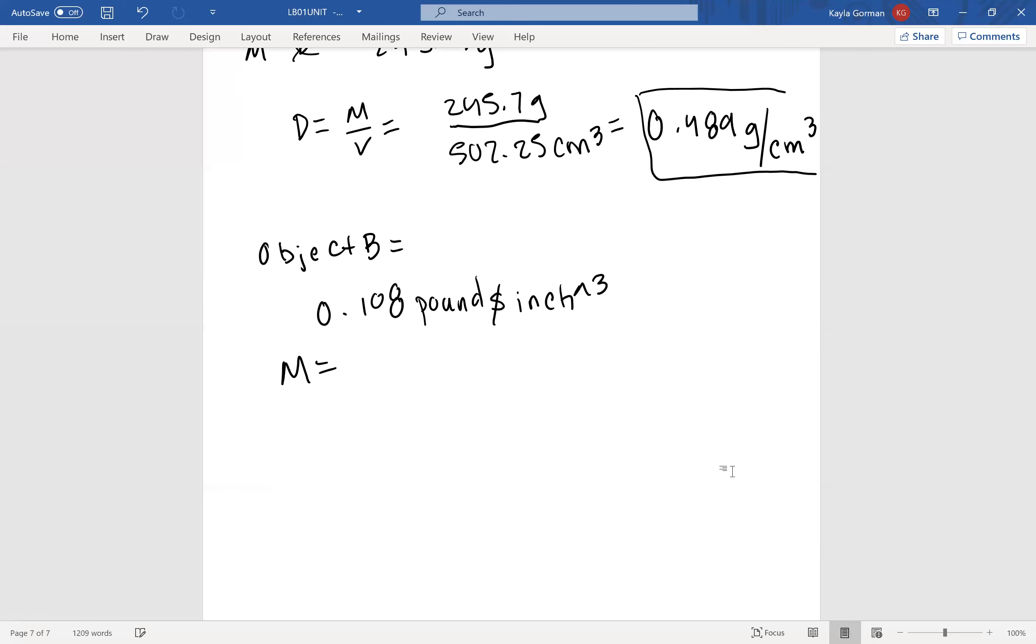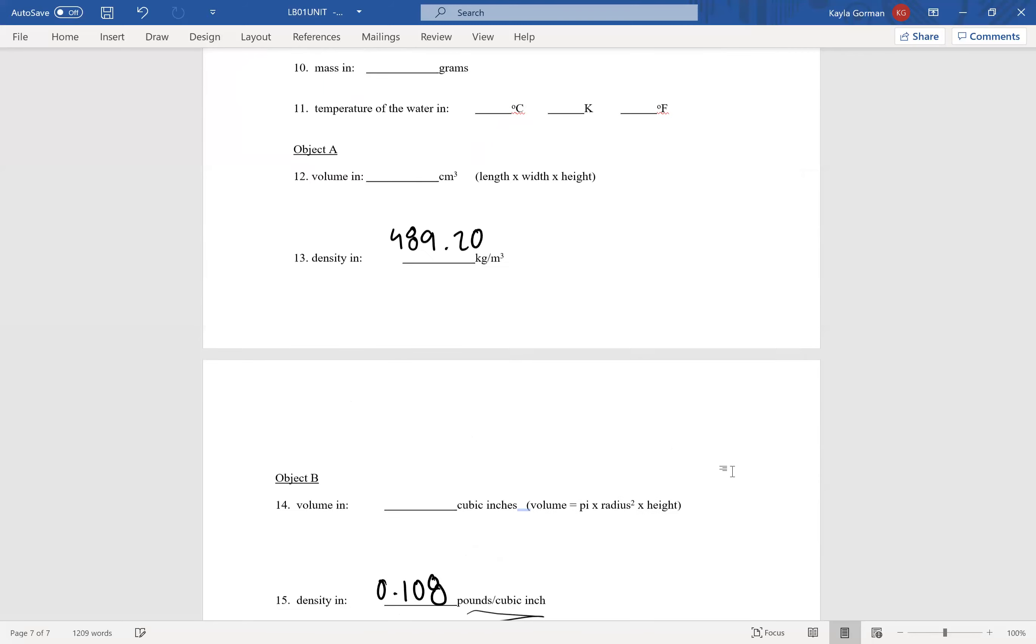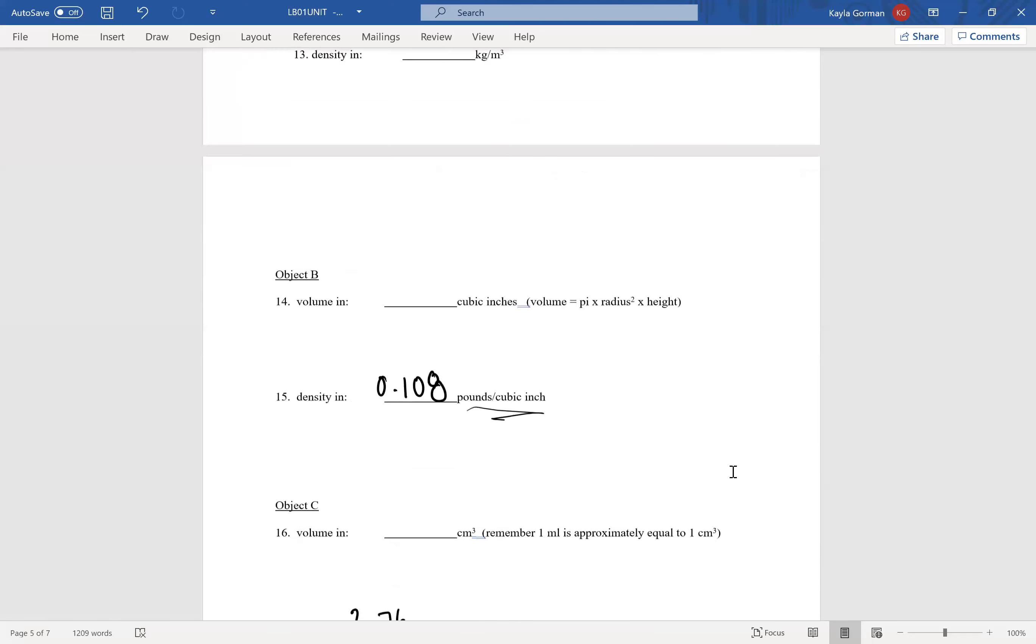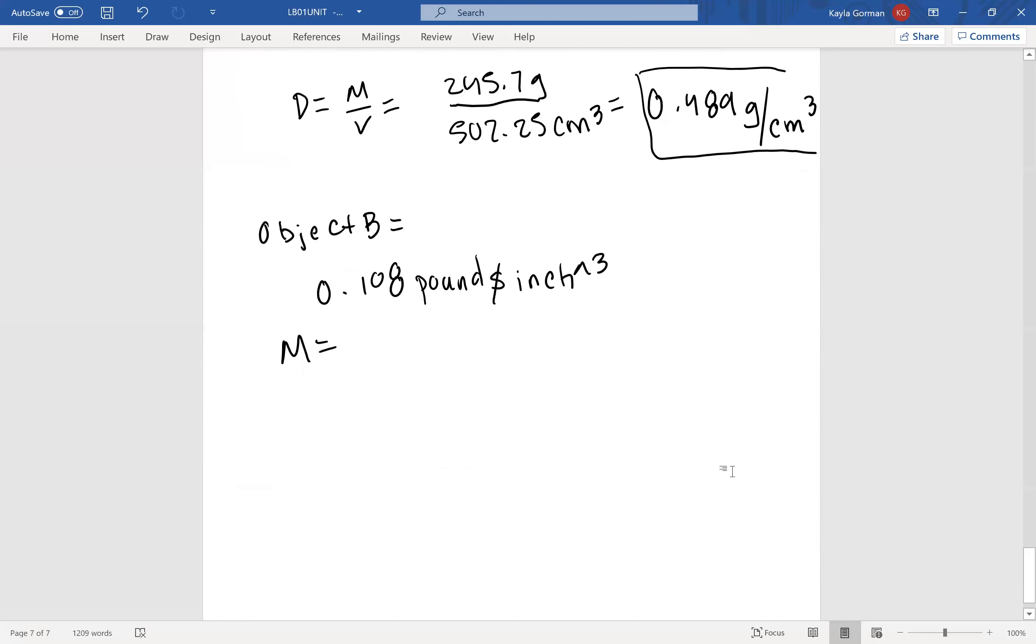And the mass in grams, if you remember, as long as you have the red one, the one with the added numbers in, remember for Object B I gave you the mass in grams and then you had to convert it to pounds. So let's use the mass in grams that I had originally given you. So the mass in grams that I had given you was 66.2 grams.